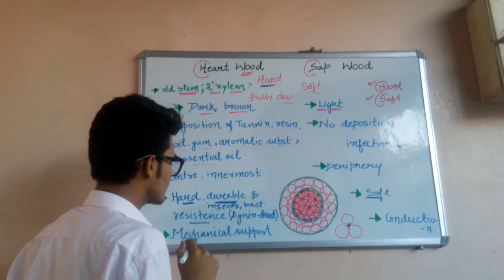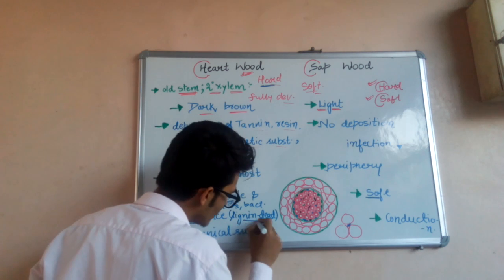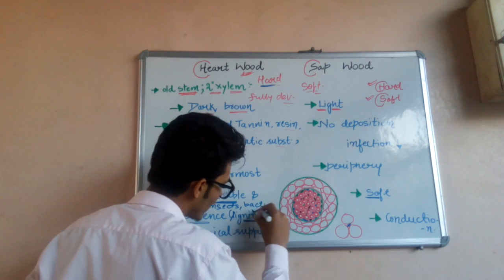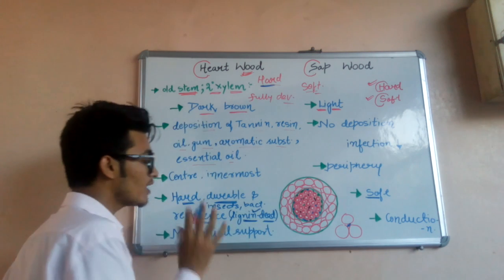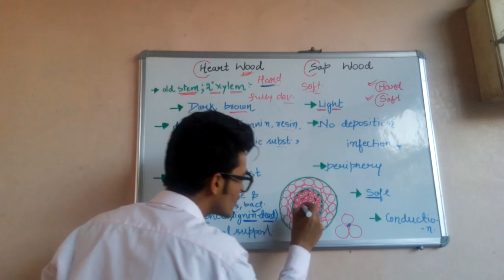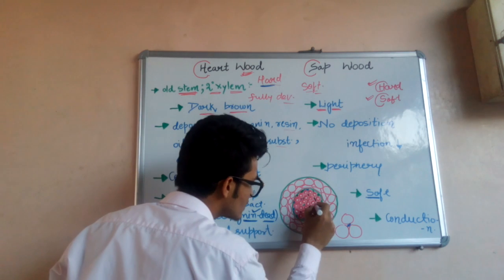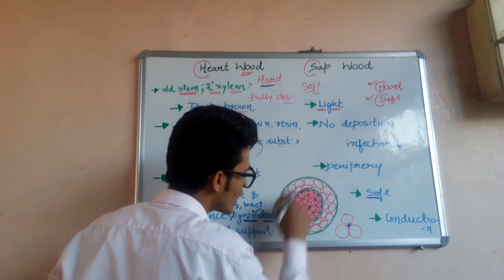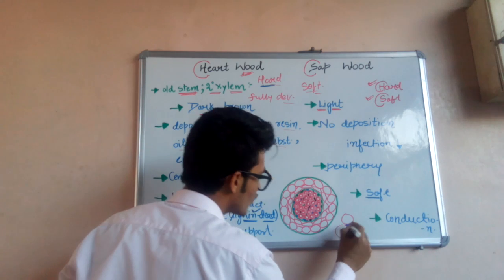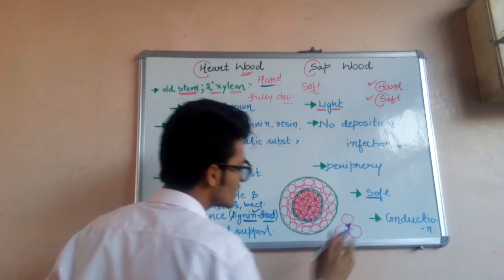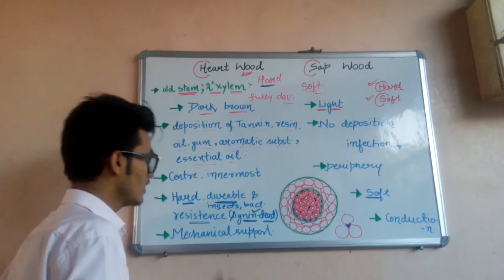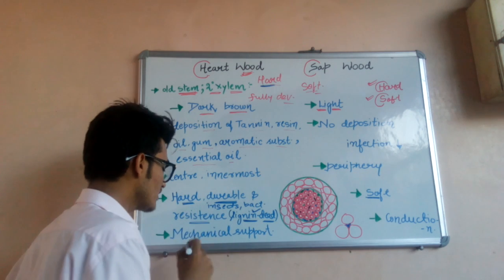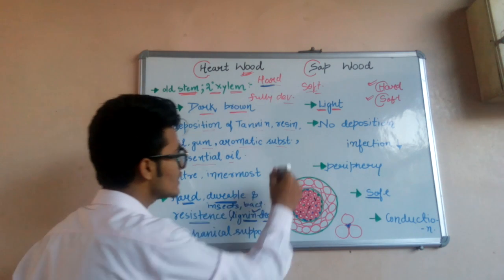Sapwood is soft, less durable, and less resistant. A dead substance called lignin is very important from an examination point of view — it deposits in the hardwood spaces to make it more resistant and more durable. This is what makes hardwood hard and resistant.